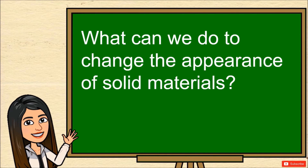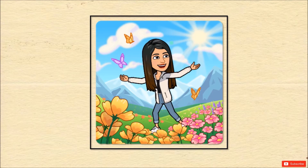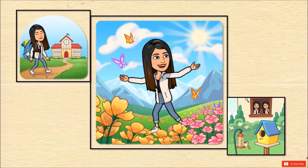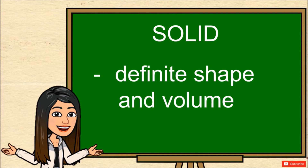Before we answer that, let's talk about solids. Solid is one of the states of matter. We could find them everywhere — in our homes, schools, church, parks, malls, fields. Solids have definite shape and volume. They hold or keep their own shape and size. This is because the molecules in the solid are tightly packed together.